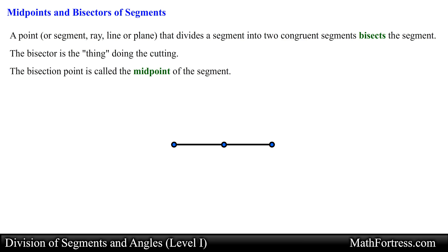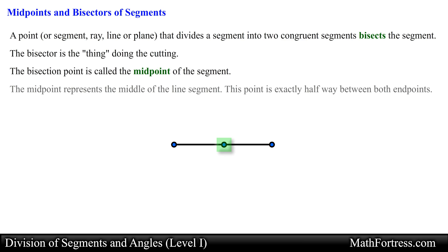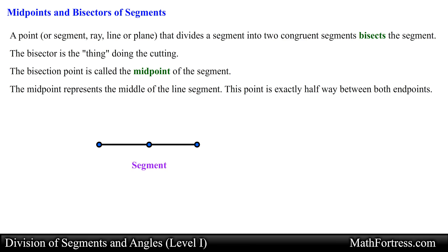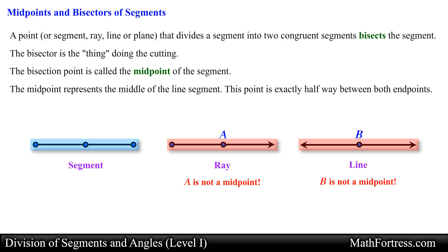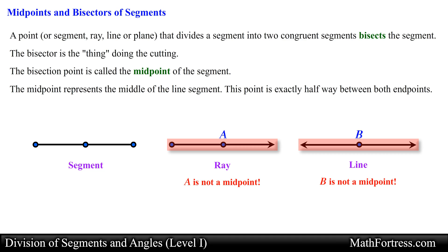The bisection point is called the midpoint of the segment. The midpoint represents the middle of the line segment. This point is exactly halfway between both endpoints. It is important to note that only segments can have midpoints. It does not make sense to say that a ray or a line has a midpoint, because rays and lines have an indefinite length — rays extend infinitely in one direction and lines extend infinitely in two directions, so they have no midpoint.